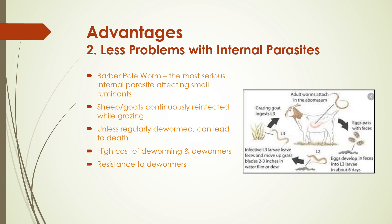Since in the DeCampo model all the sheep are kept indoors on slotted floors all the time, there is no chance of any of the sheep coming into contact with internal parasite larvae. This eliminates the need to deworm the sheep, yet they are kept free of internal parasites. This can have significant cost benefits.